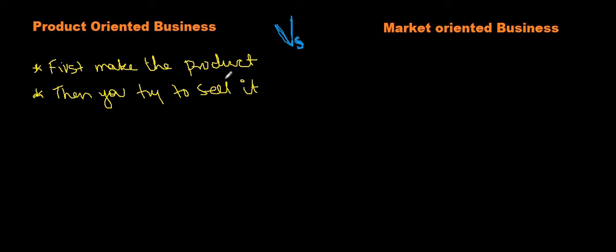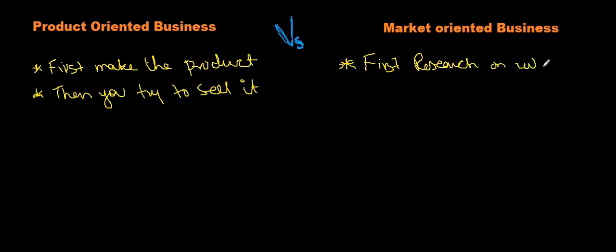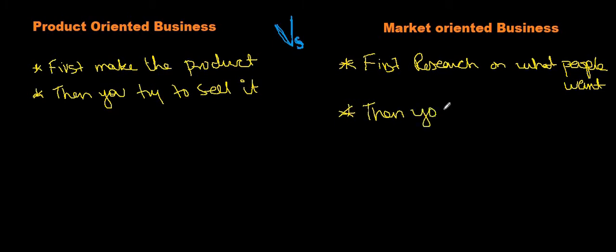On the other hand, market-oriented is where you first research the market — you see what people want — and then you make a product. You first research what people want, and once you've done that, you make the product accordingly.